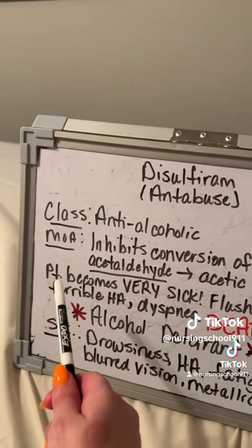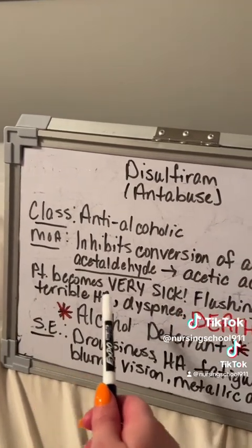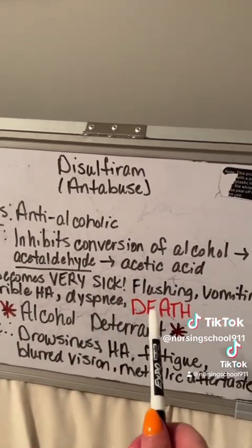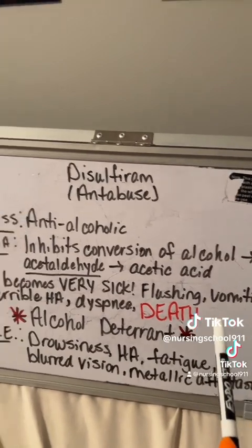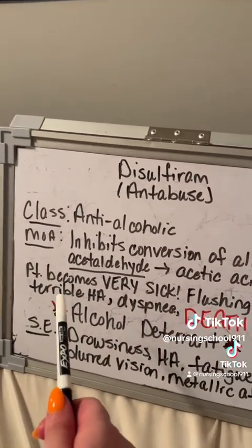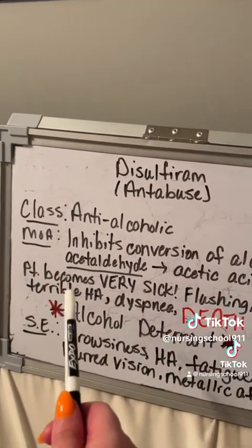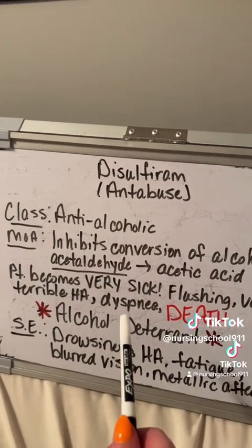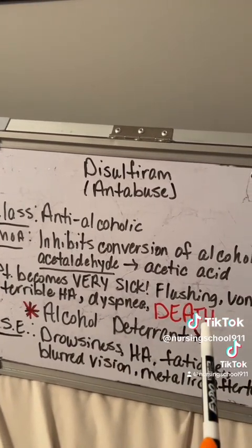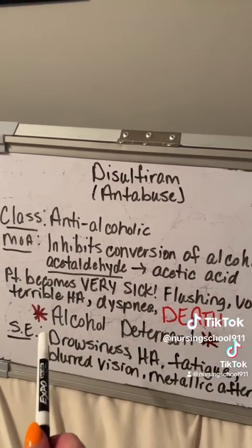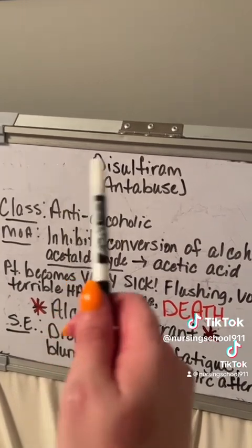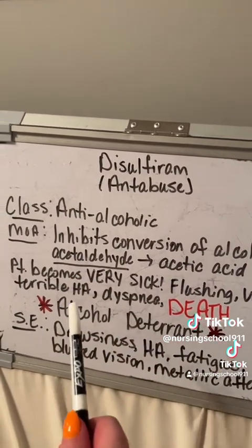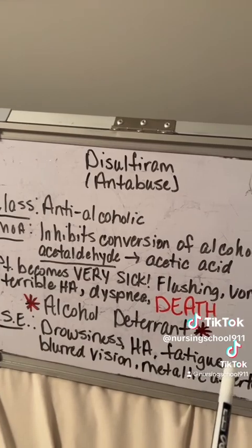The patient becomes very, very sick with flushing, extreme projectile vomiting, an absolutely horrendous headache, dyspnea, and even death. This is what makes Antabuse or disulfiram a very effective alcohol deterrent.